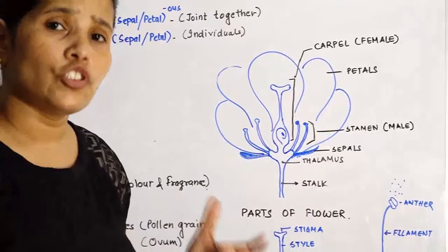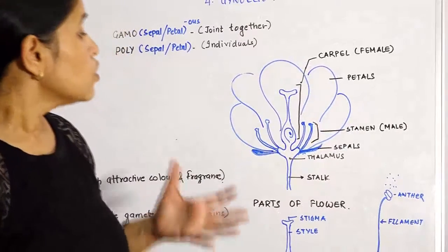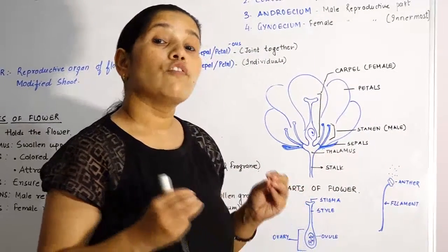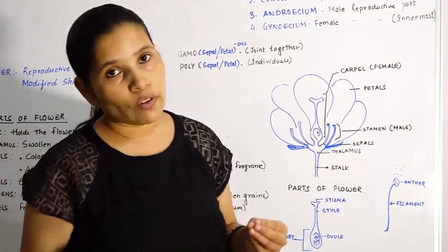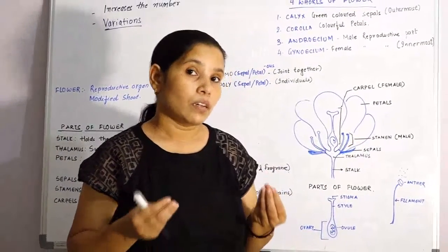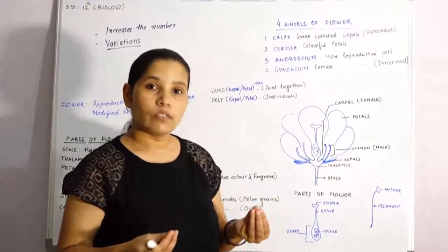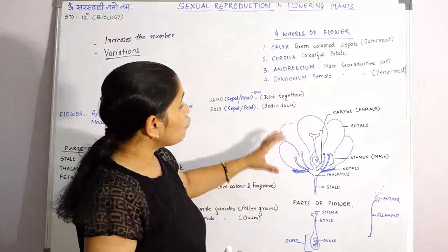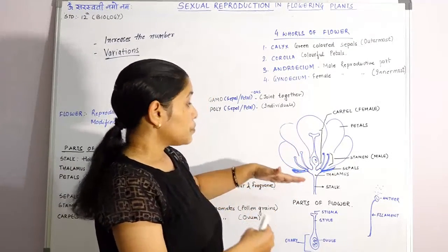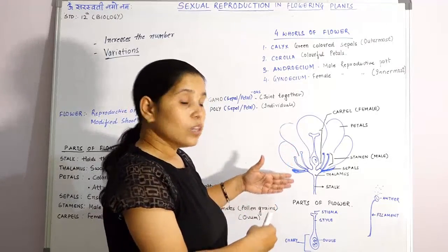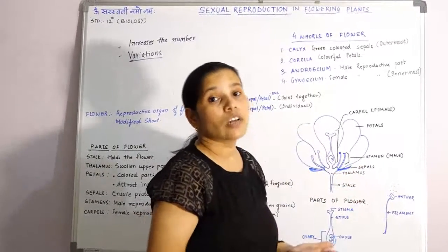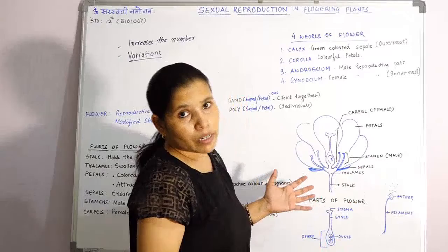Just above the thalamus you get sepals. Sepals are generally green in color. They play a very important role when the flower is in a bud stage. Just like a baby needs special care, when the flower is in its young stage it needs special care. So sepals provide extra protection to the flower when it is in the bud stage.